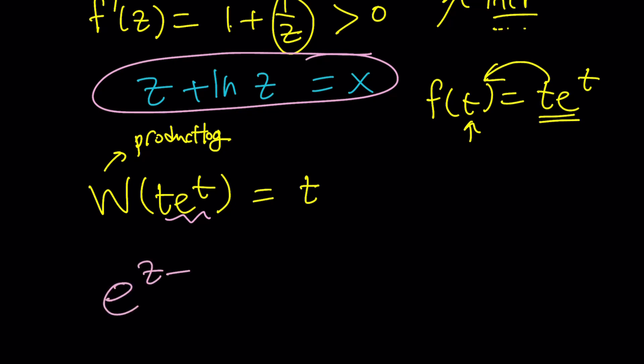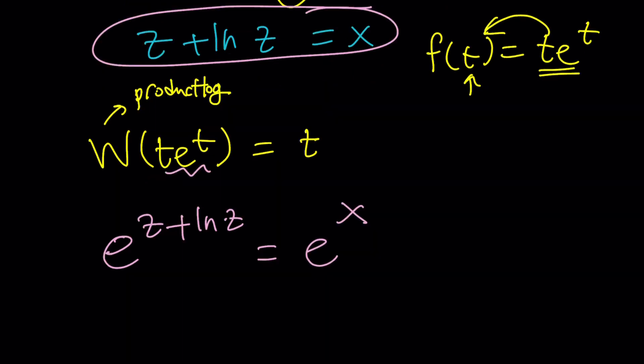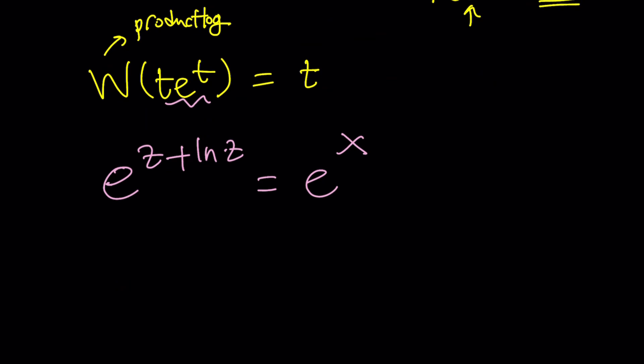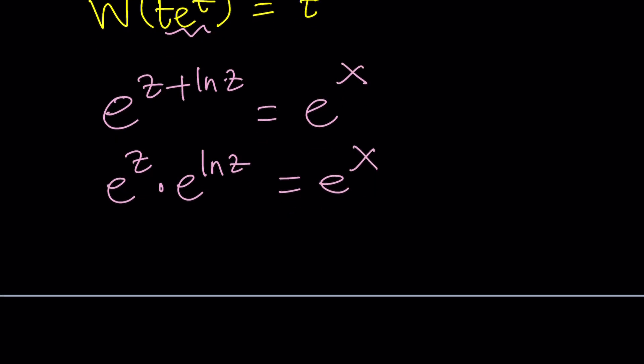So here's what we're going to do. We're going to do e to the power of both sides. Since z plus ln z is the same as x, I can just do this, right? And then from here, we get something amazing. You'll be surprised. e to the z times e to the ln z equals e to the x. Awesome. And now e to the ln z is just z. And it's just amazing, isn't it? So now we get the following, z, e to the z,